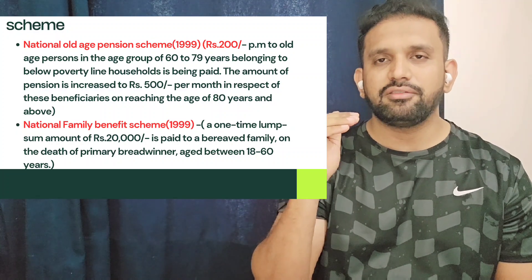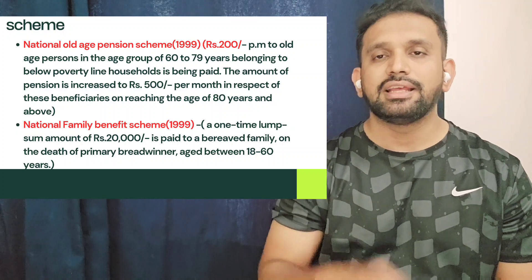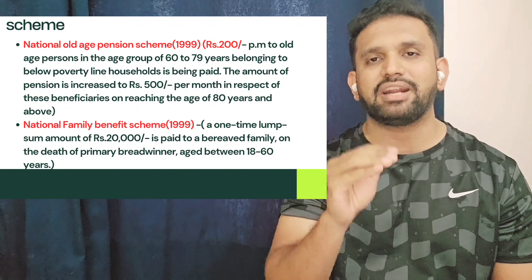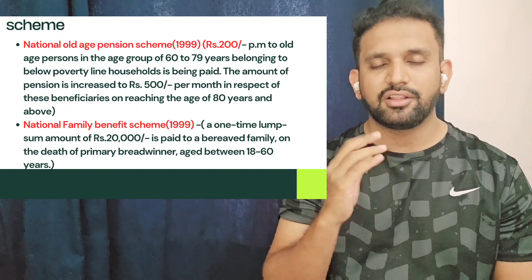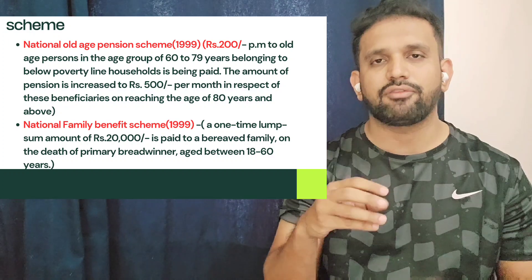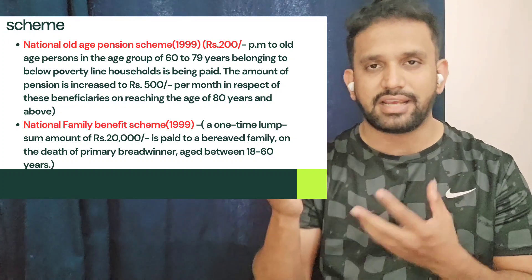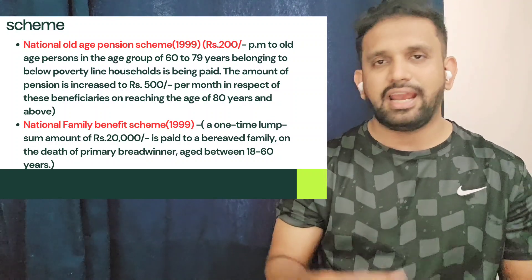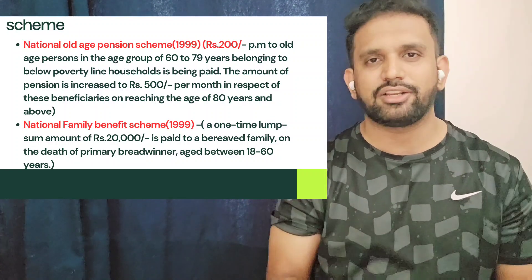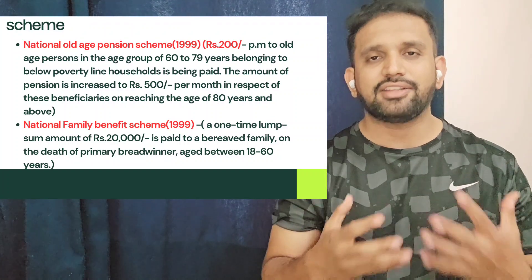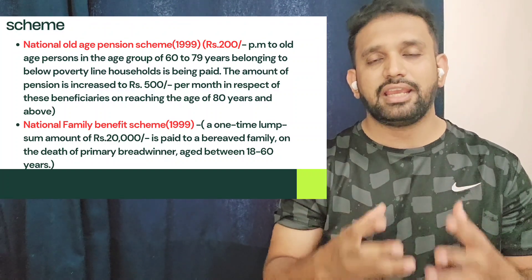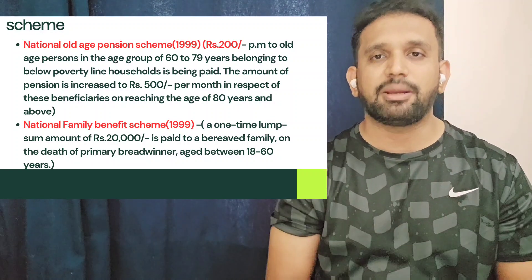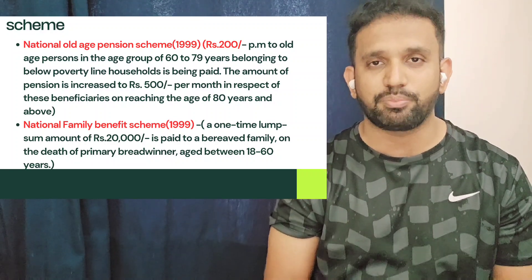The second scheme is the National Family Benefit Scheme. This is given to households in which the breadwinner — the primary earner of the family, whether father or mother — has died. Today, not only the father but the mother can also be the breadwinner. If the breadwinner of the family dies, that particular family will be given a cash transfer of 20,000 rupees in order to help sustain the family.